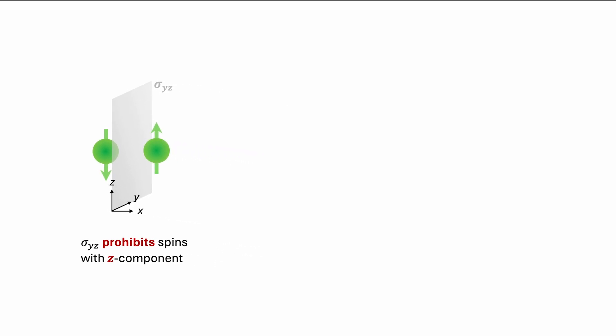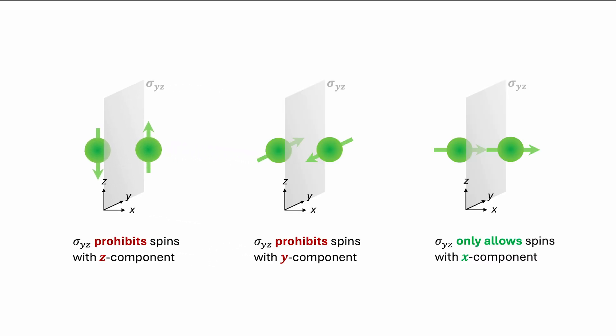Extending this analysis to other spin components, we see that only a net x-component of spins is permissible in the presence of a y-z mirror symmetry. Conversely, we can conclude that to achieve a z-component of spins, our system must break both the x-z and y-z mirror symmetries.